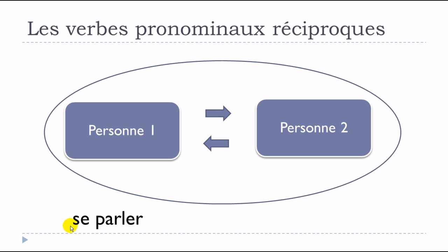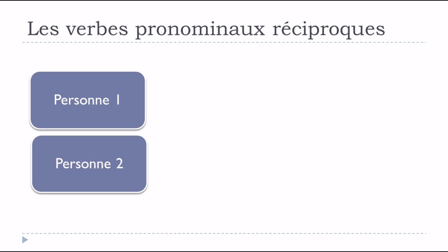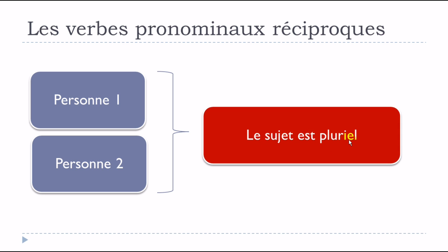A good example is se parler. The sentence ils se parlent means 'they speak to each other' — that's the core concept of les verbes pronominaux réciproques. Personne numéro un parle à personne numéro deux and vice versa. Because we need two persons, le sujet est au pluriel — the subject must always be plural, as with ils se parlent here.